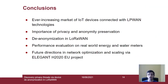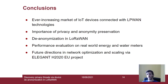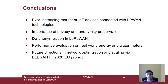In summary, we have shown that the IoT LPWAN market is ever-increasing, and highlighted the importance of privacy and anonymity preservation, and the consequences of device de-anonymization. We have shown how device de-anonymization can be carried out in LoRaWAN, and presented performance evaluations on real-world energy and water metering datasets. We have also outlined future directions in network optimization and scaling via the ELEGANT H2020 EU project. Thank you for your attention.